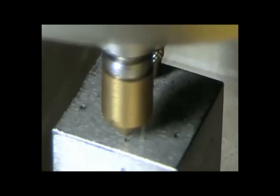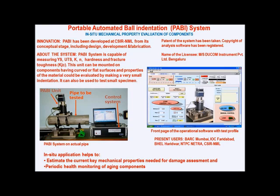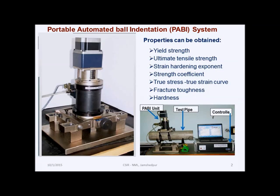It may be put on pipe with chain system and can be tested from any direction. For flat and other components magnetic shoes can be used to put the PAB-E system on the components.